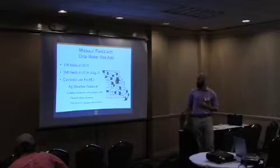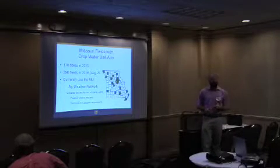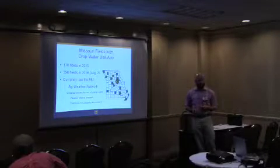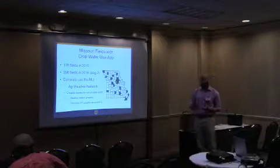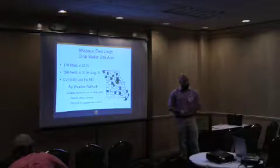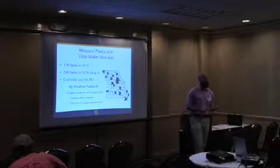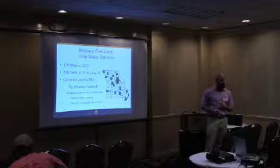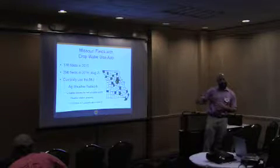We use the MU-Ag weather network. All these yellow dots that you see here are weather stations that we have access to — real-time weather data that logs precipitation, temperature, solar radiation, and short crop ET, which is what we use for this model. It goes into a modified Penman-Monteith equation that is different for each of the crops based on the water use of that crop at that particular growth stage.